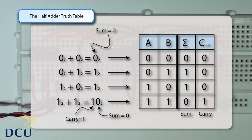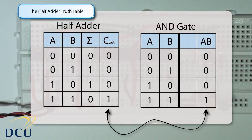The next thing we have to do is work out how we can realize this using logic gates. If we look at the C_out column of the half adder, we can see that we only have an output of 1 for C_out when A is equal to 1 and B is equal to 1. This is exactly the same as an AND gate, which means we can model the C_out component of the half adder using a single two-input AND gate.